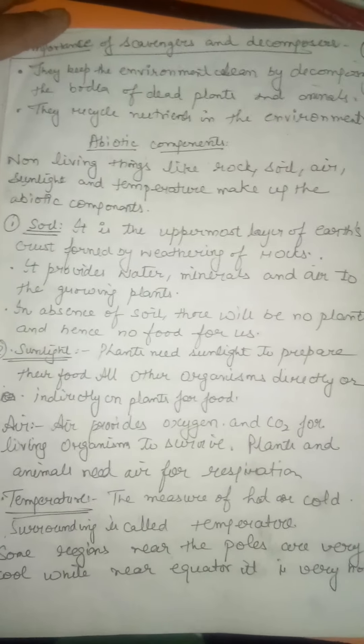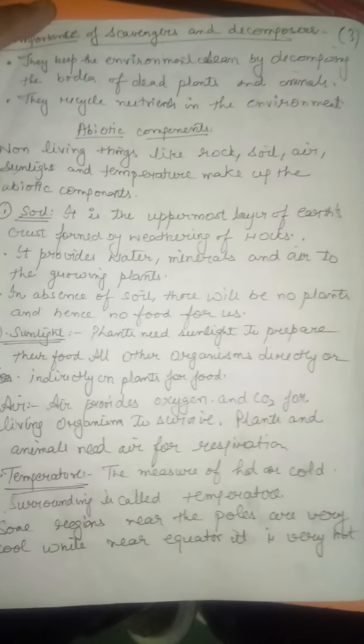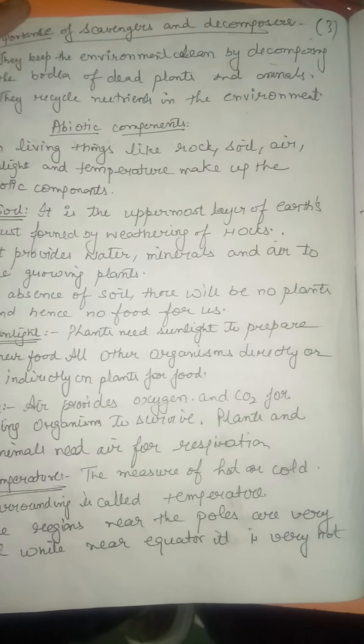The first abiotic component is soil. Soil is the uppermost layer of the earth's crust. It provides water, air, and minerals for the proper growth of plants. Water is absorbed through roots, and minerals present in the soil are in the form of nitrates and sulphates.